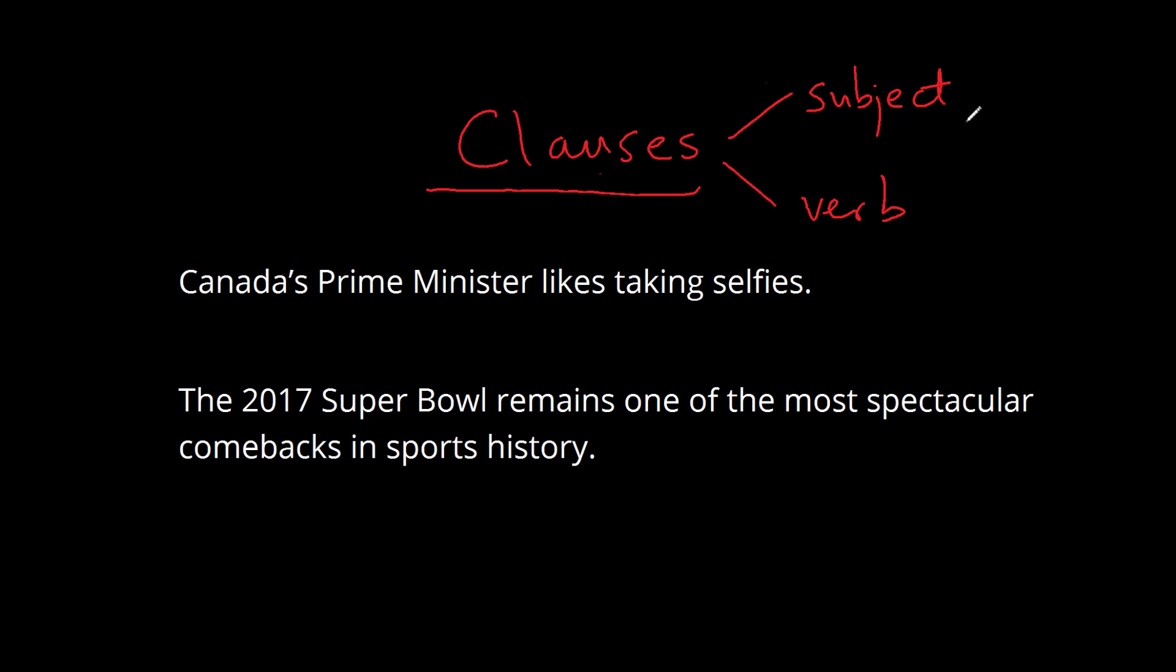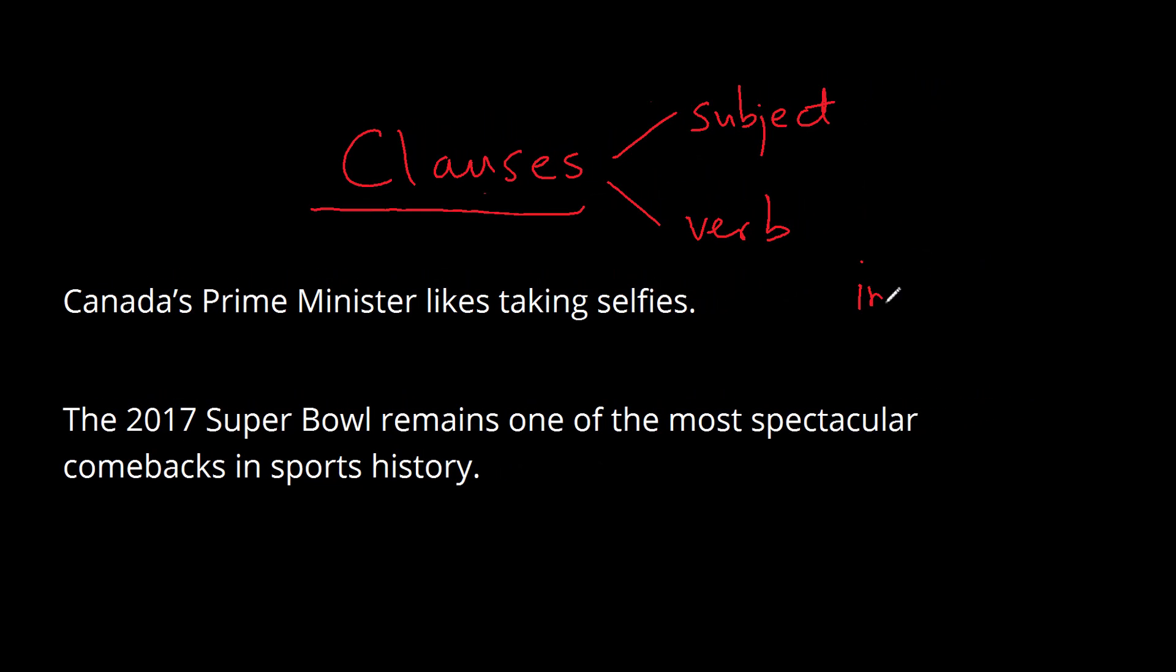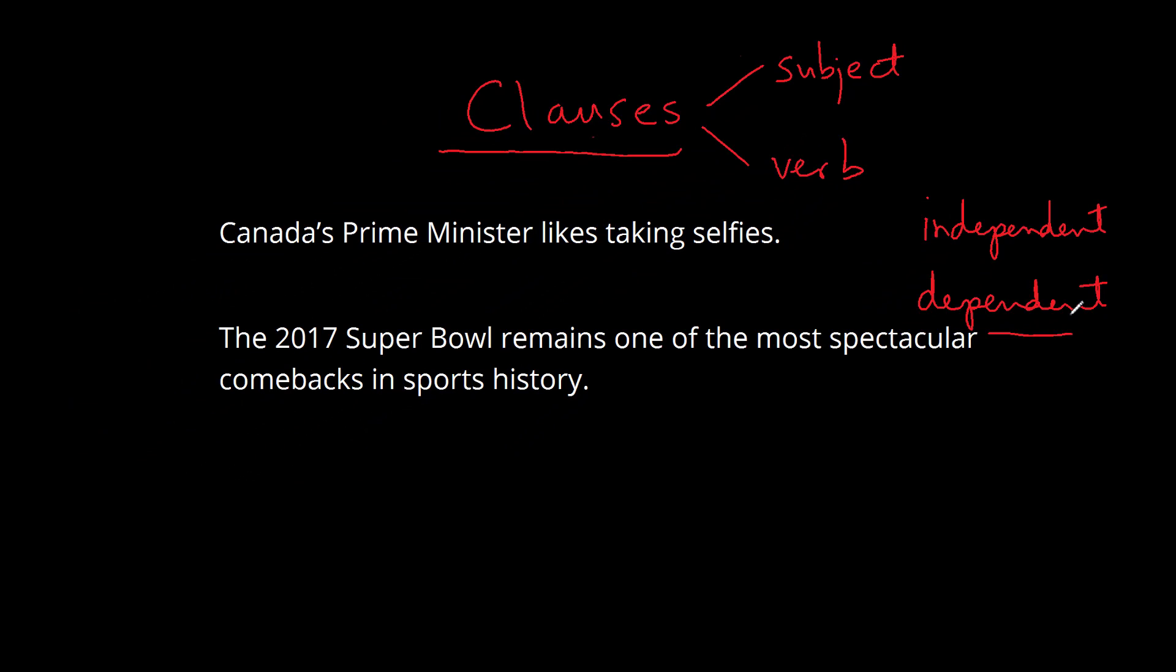Now there are two kinds of clauses. There are independent clauses, clauses that can stand by themselves as a complete sentence, and there are dependent clauses. We'll talk about both of these. So dependent clauses cannot be sentences by themselves. We'll start with independent clauses here.